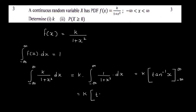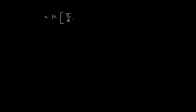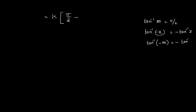That is k into tan inverse of infinity minus tan inverse of minus infinity. Tan inverse of infinity is pi by 2, and tan inverse of minus infinity is minus pi by 2. So that gives k into pi, and since this equals 1, the value of k is 1 by pi.